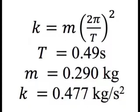The previous values give us an average period of about half a second. The cell phone mass is about 290 grams, and that gives a k value, a spring constant, of about 0.5.